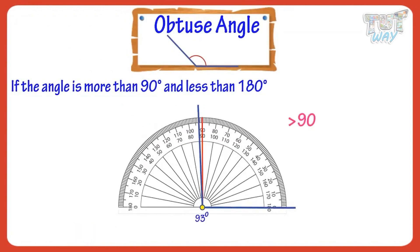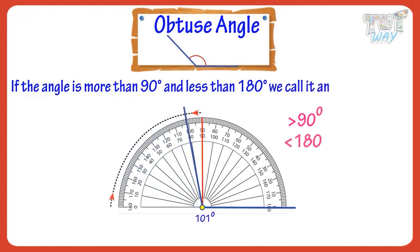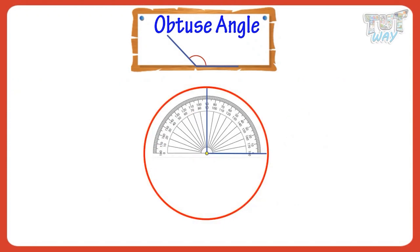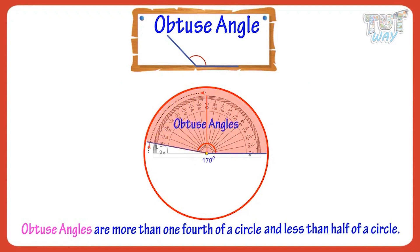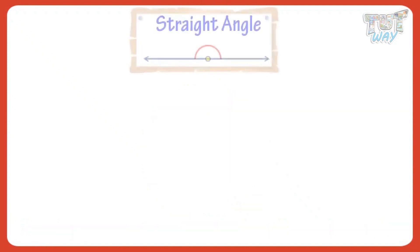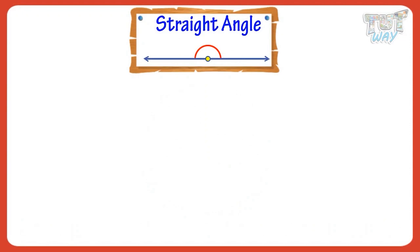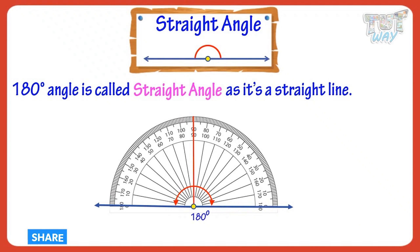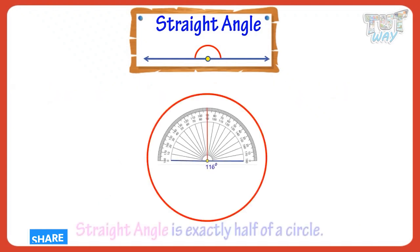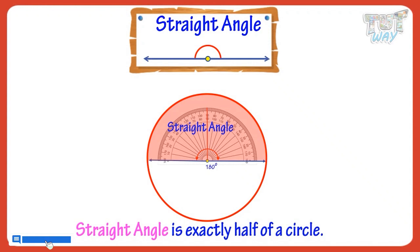If the angle is more than 90 degrees but less than 180 degrees, we call it an obtuse angle. Obtuse angles are more than one-fourth of a circle and less than half of a circle. A 180 degree angle is called a straight angle, as it forms a straight line. A straight angle is exactly half of a circle.